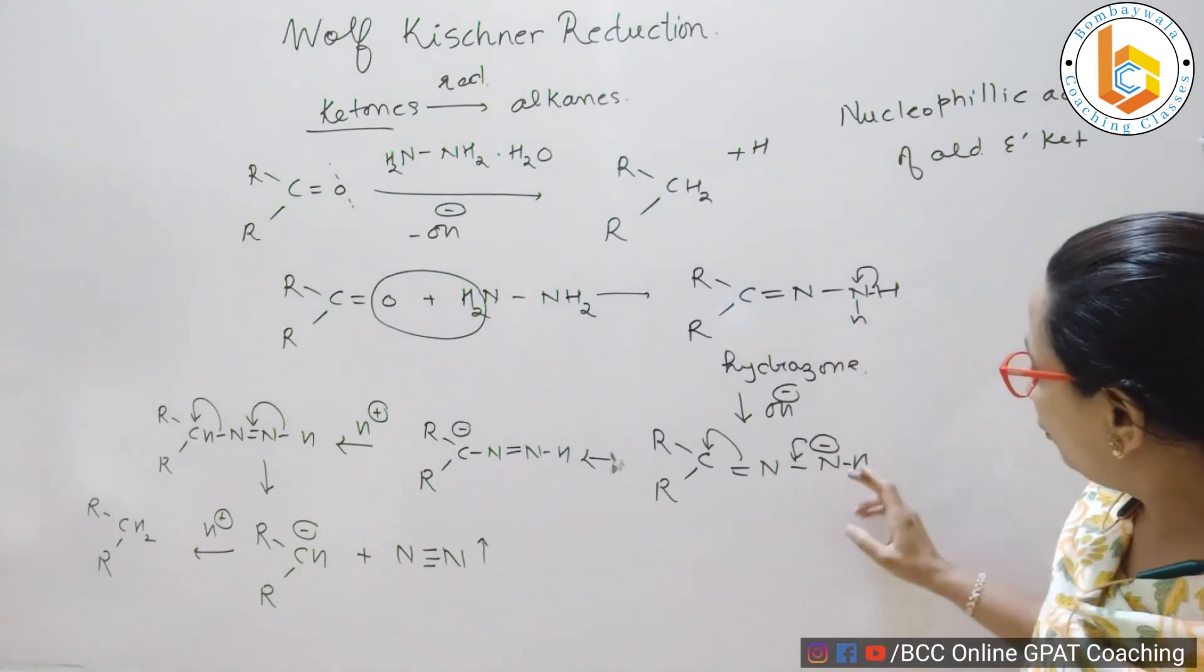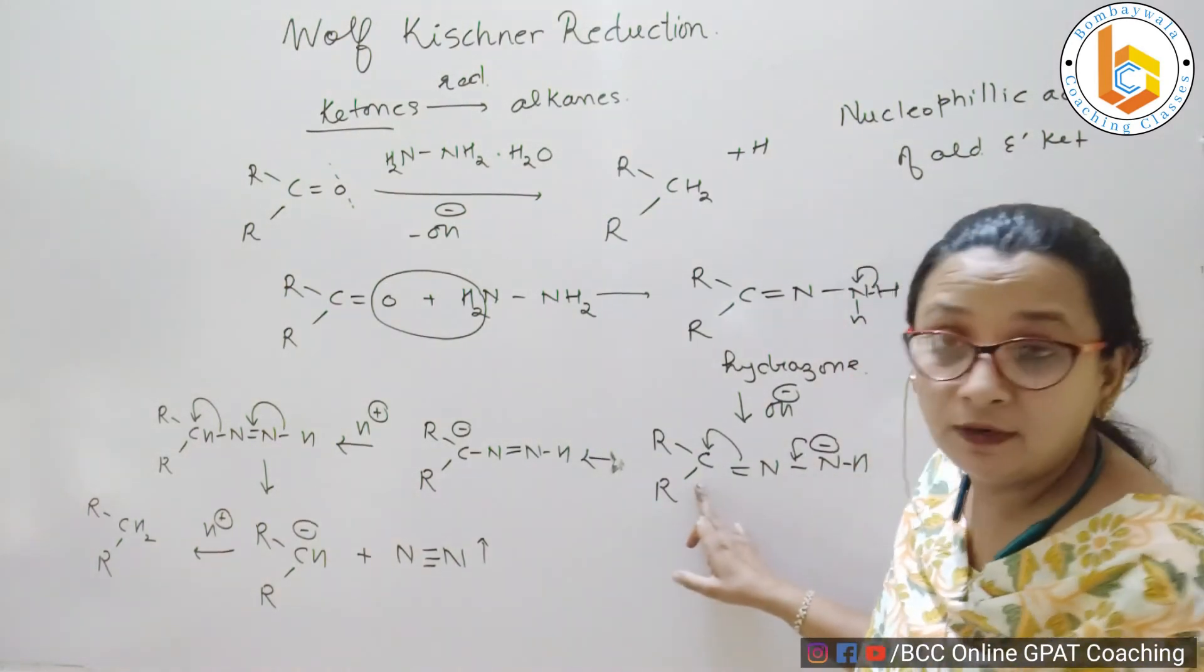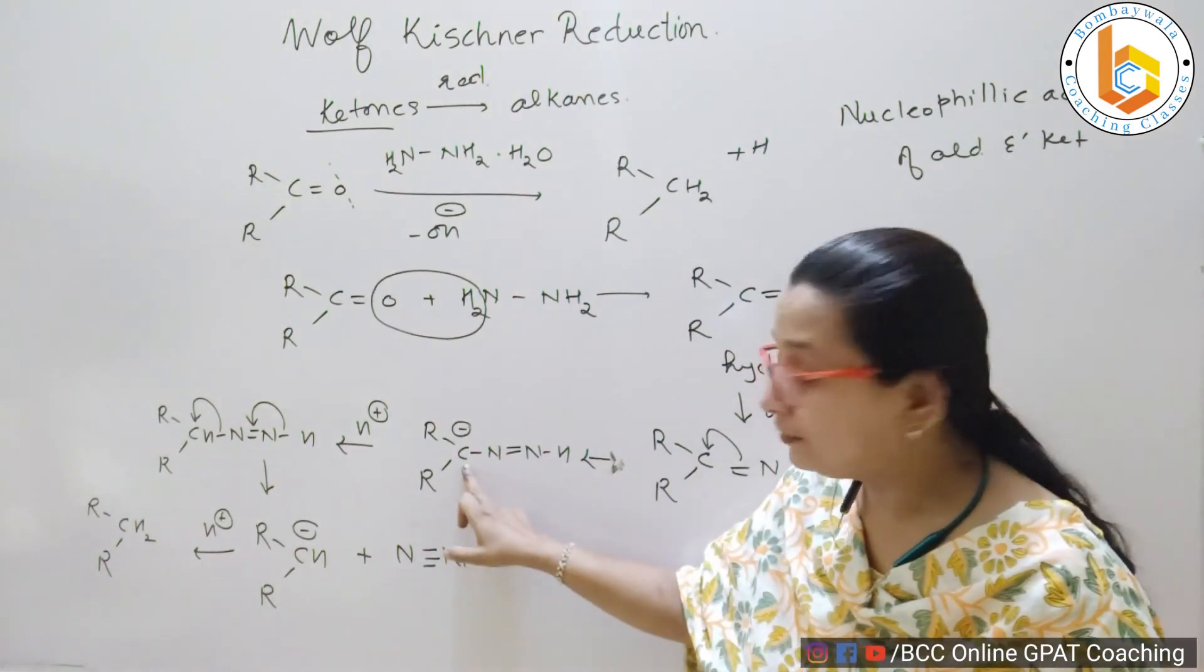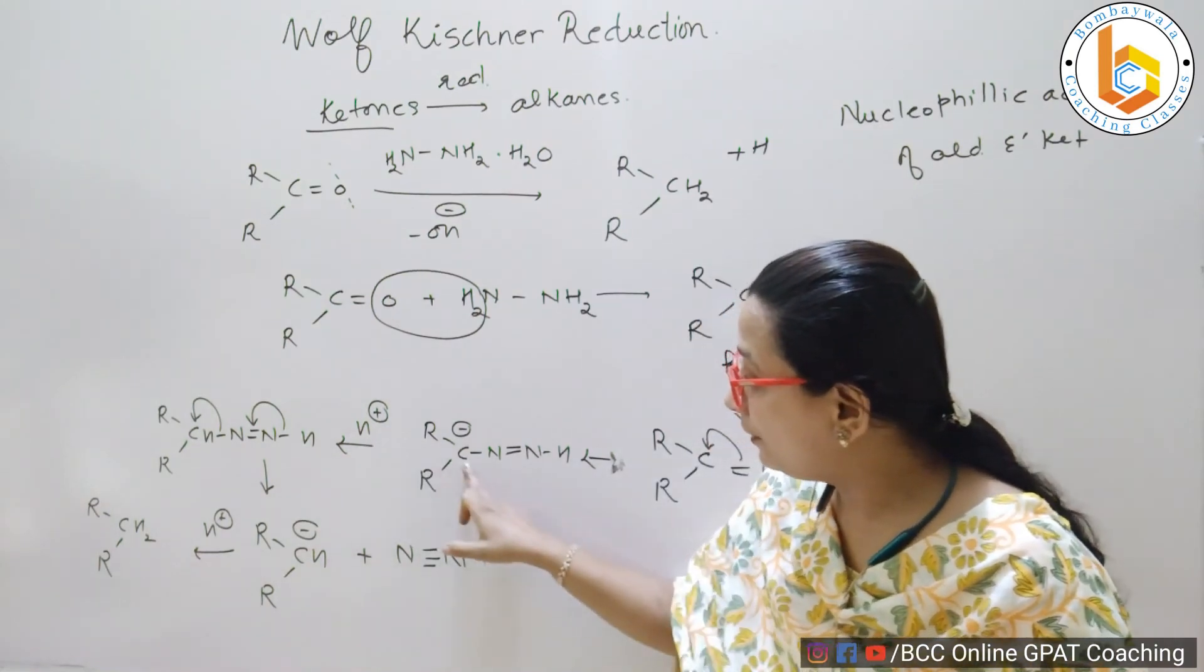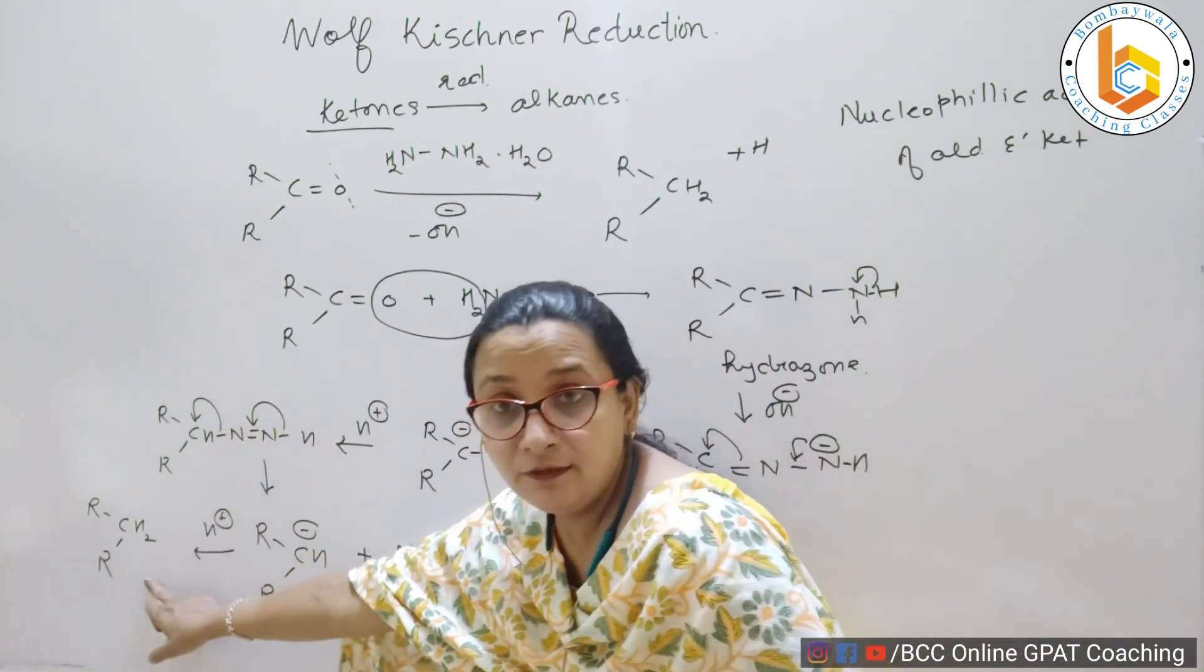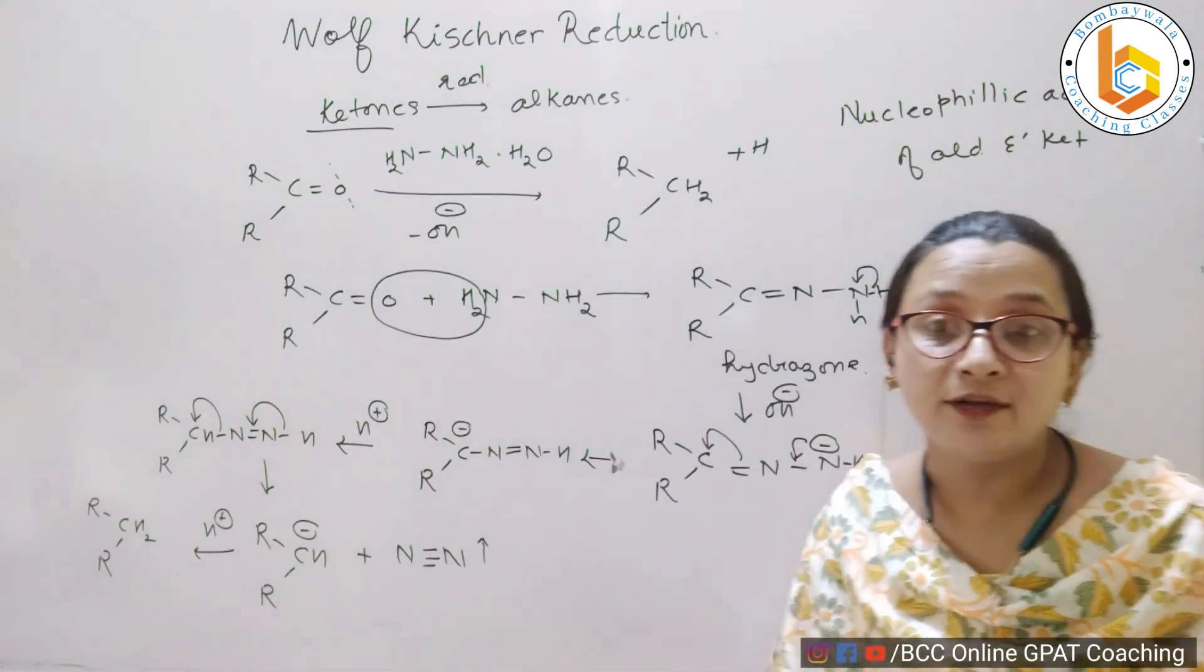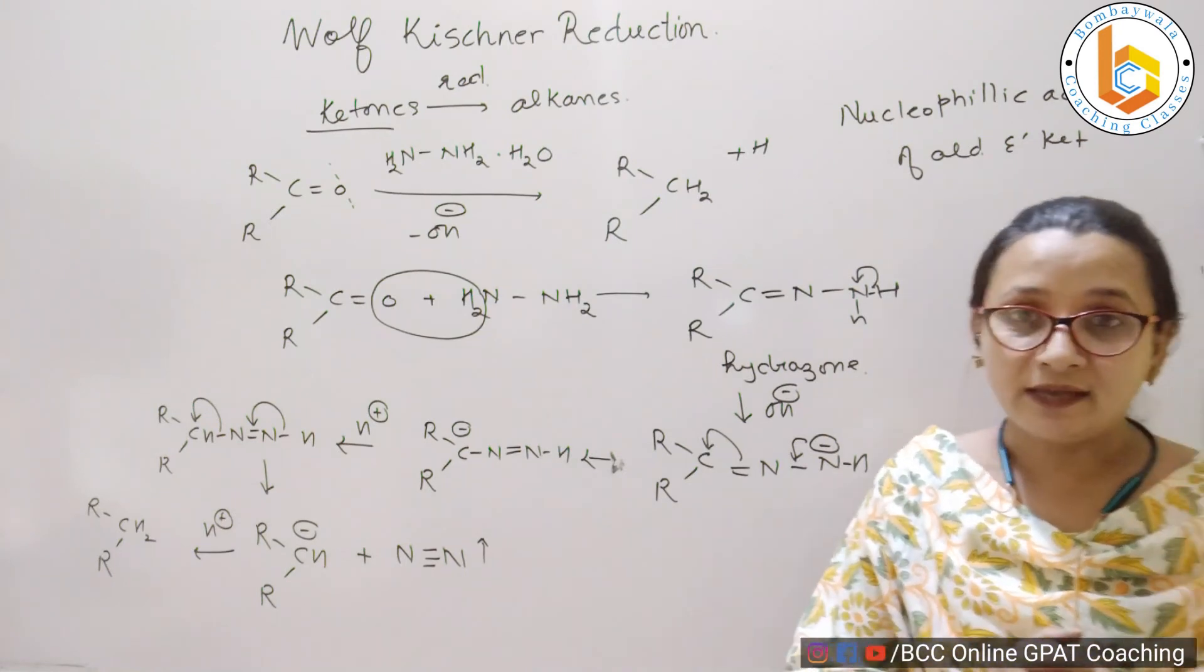So, what is happening here? There is loss of water, formation of a hydrazone. Loss of a proton, deposition of a negative charge, movement of this type of negative charge across the system and you get a carbanion. On this carbanion, there is addition of a positive charge, a proton from the system. This is again, there is a loss of a proton and formation of a carbanion which leads to formation of alkane and a side product that is nitrogen gas is involved.